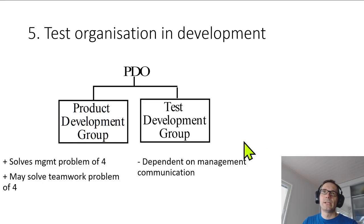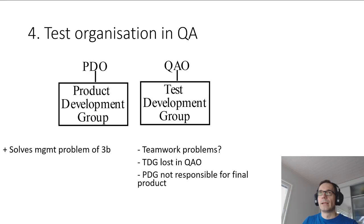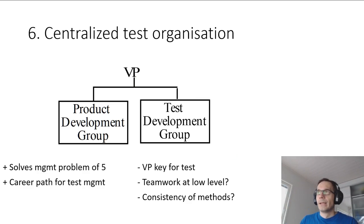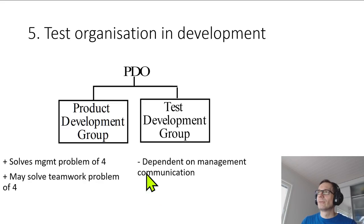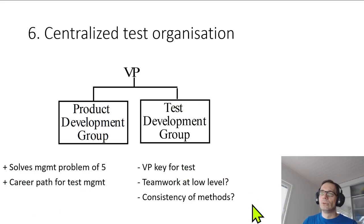Moving further, there is a decision to elevate the test development group to become a centralized test organization — no longer inside product development. This is different from the approach where test organization sits in quality assurance. Now the test development group becomes a top-level organization directly under a vice president, which elevates the importance of testing. However, similar teamwork problems at the lower level and consistency of methods could still occur. On the positive side, this would offer a better career path for test management, as people could rise higher in the organization.